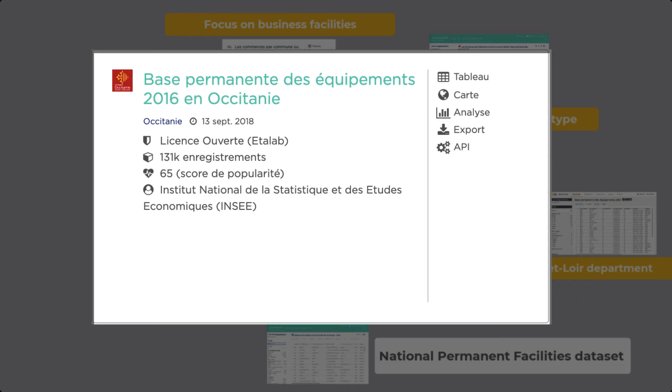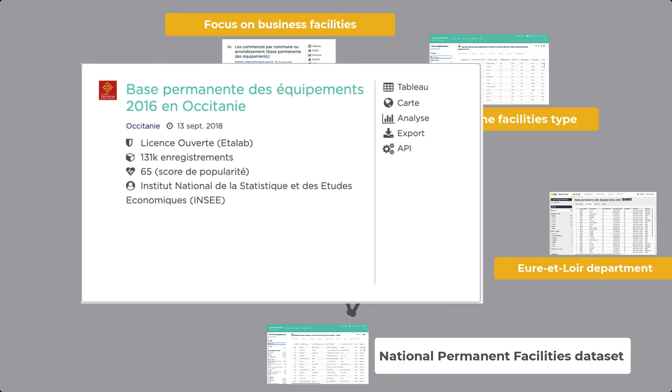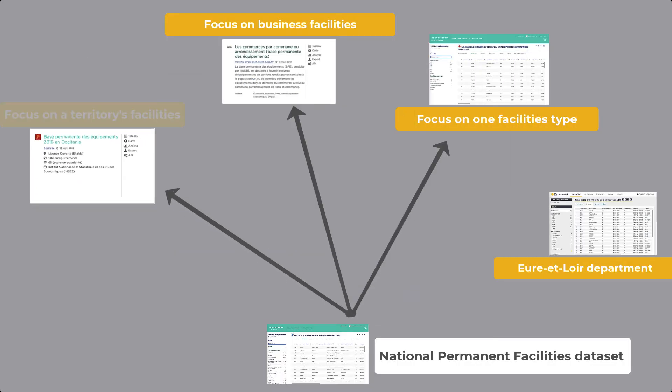The Paris-Saclay Territory filtered the data another way to display the permanent facilities connected to businesses, while the Occitanie region also applied a territorial filter.